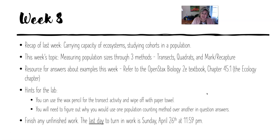For transects, you're going to count how many red, blue, and green squares — though I thought they were yellow — touch lines that you draw on this big colored piece of paper. You can actually take the wax pencil from one of the other week's kits and use that on this paper instead of a wet erase marker. I just used the wax pencil and wiped it off with a paper towel, and that worked perfectly fine. Transects count how many organisms are touching a line drawn randomly across a population — it's a random sampling.